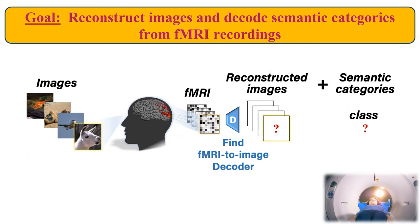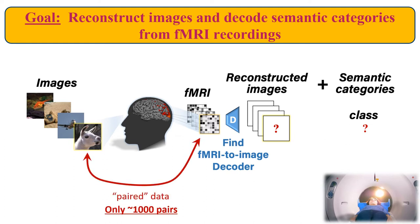In this work we consider the task of reconstructing observed images from a subject's fMRI recordings and decoding their novel and rich semantic categories. The available data for the task consists of about a thousand pairs of images and their corresponding fMRI scans, without any semantic information.